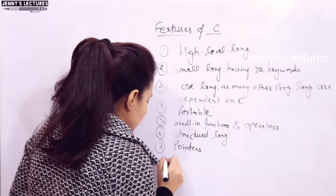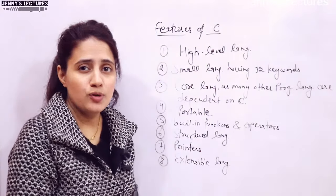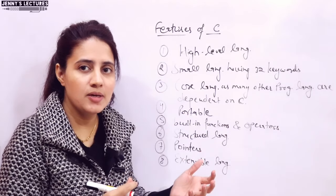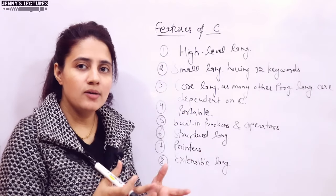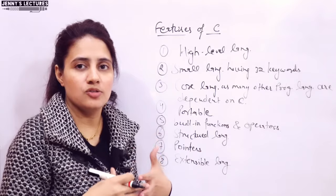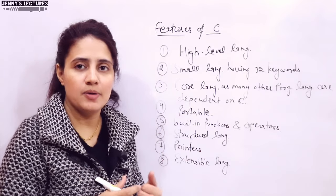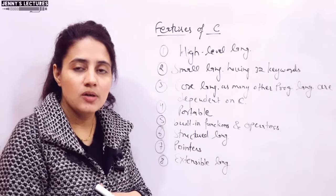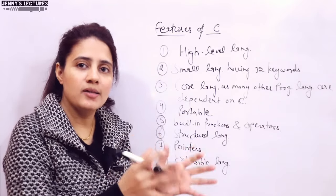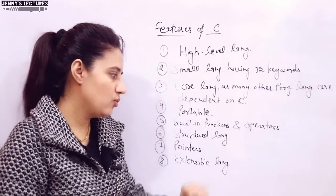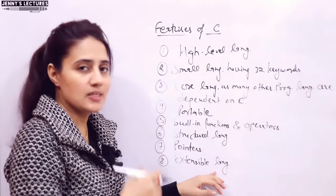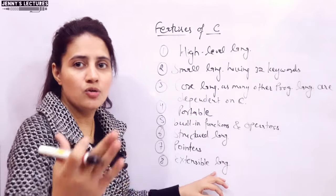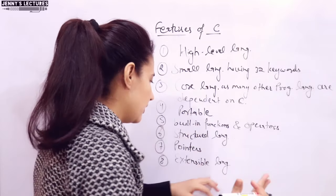The next feature is that C is an extensible language. You can extend it — meaning you can add your own functions to the C library. You can create your own function and add it to the C library. That is why it is called an extensible language — you can add your own features and functions to the C library.